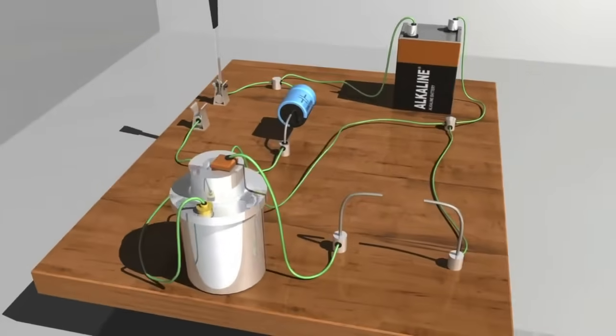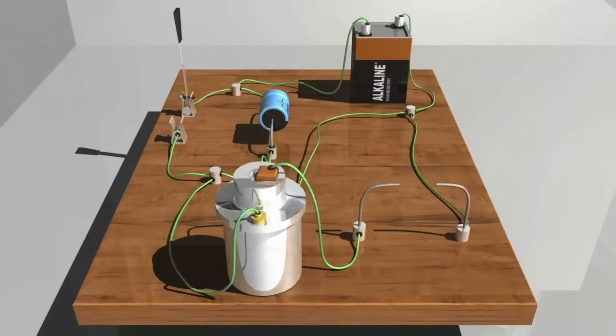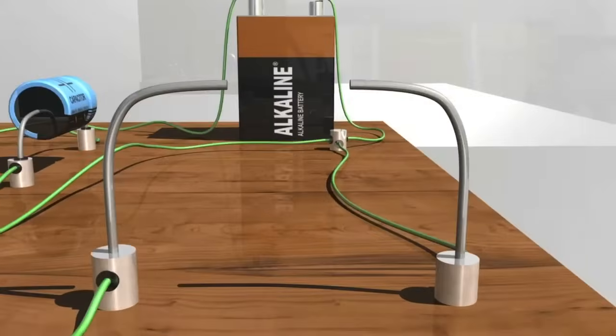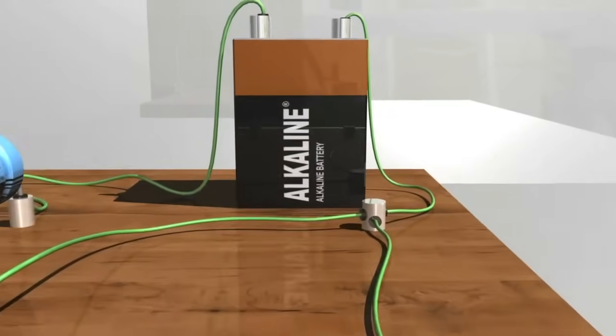Conventional automobiles burn gasoline in an internal combustion engine and convert that energy into motion, but first a spark is needed to ignite the fuel mixture. This demonstration shows how a 12-volt battery generates the high voltage required to create such a discharge.